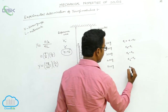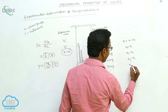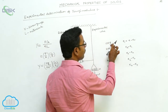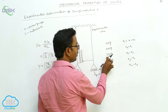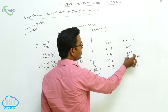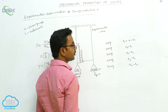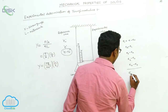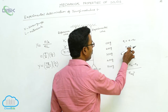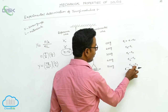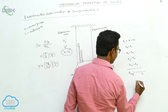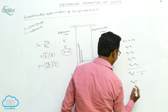Only for the fifth 100 grams mass, the elongation is E5 minus E4. Now individually we find the elongation for the first, second, third, fourth, and fifth 100 grams mass. These are the individual elongations. Now we find the average elongation, which is nothing but the sum of all these five values divided by 5.